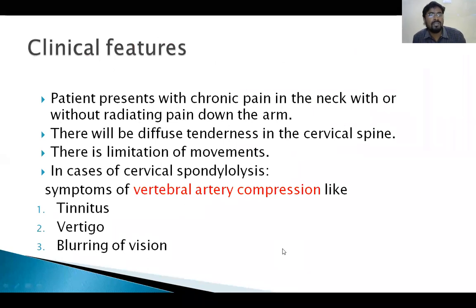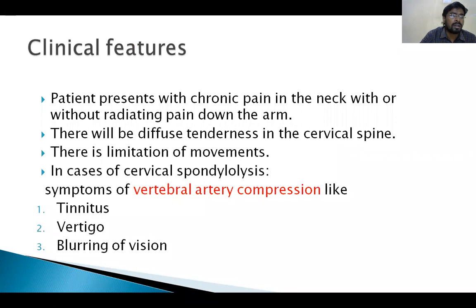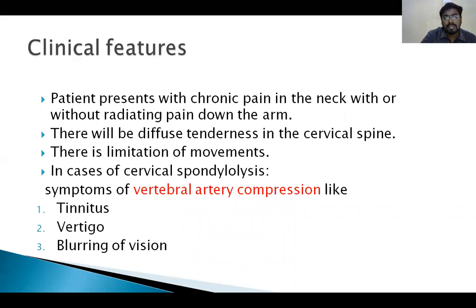What are the features of cervical spondylosis? The patient usually complains of chronic pain in the neck region, which may or may not radiate to the back of the neck, front of the neck, or the corresponding upper limb. There will be diffuse tenderness on palpation of the cervical spine and limitation of neck movements. When cervical spondylosis is severe, it may compress the vertebral artery, and symptoms of vertebral artery compression include tinnitus, vertigo, and blurring of vision.